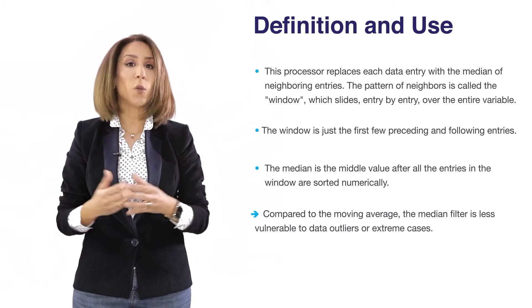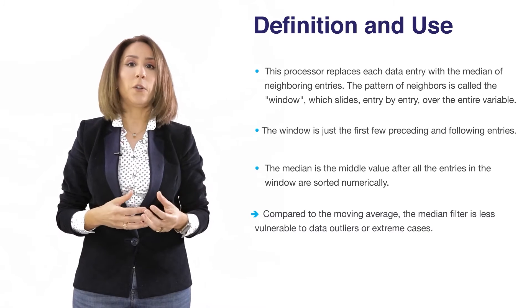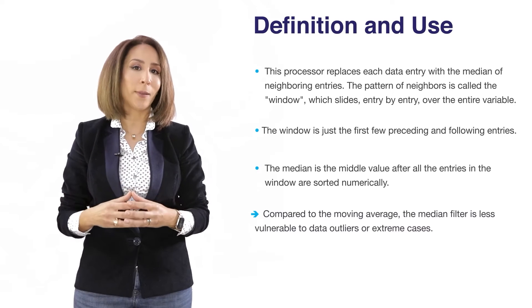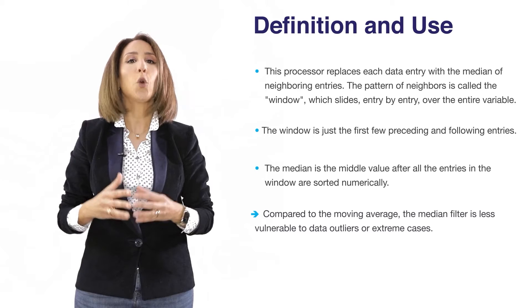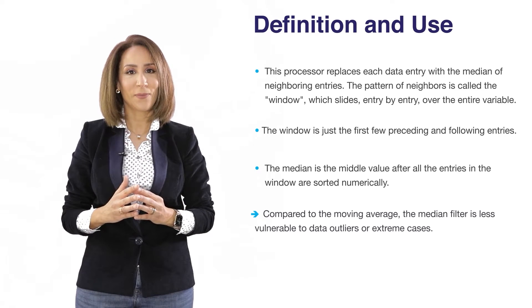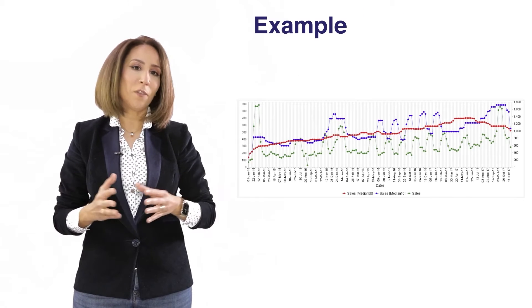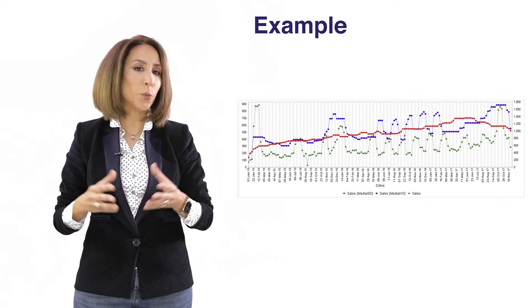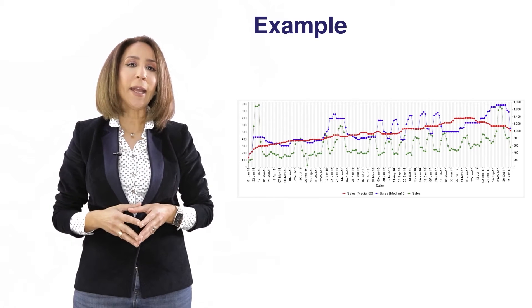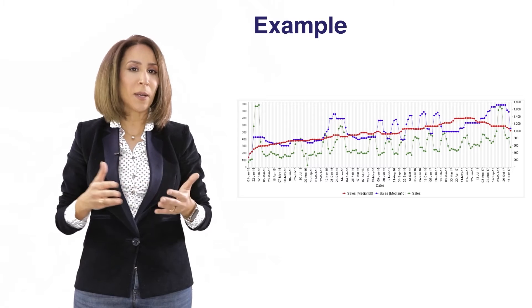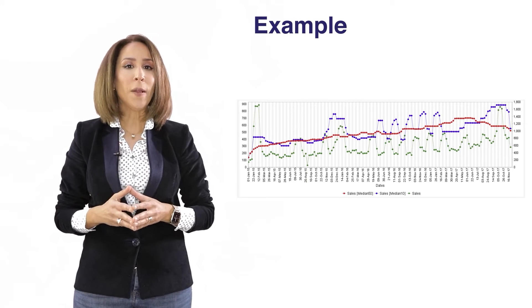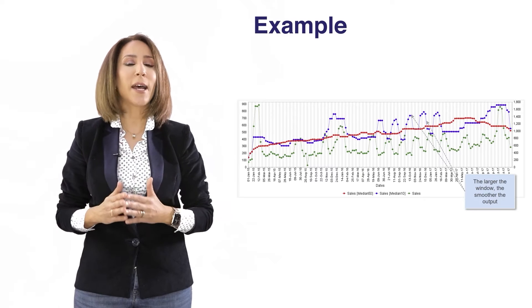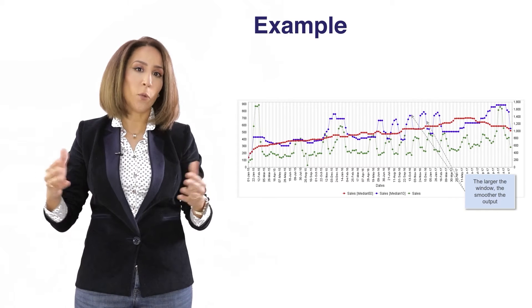If you compare the output from the median filter and the moving average, generally the median filter is less sensitive to outliers than moving average when it comes to smoothing your data. This is an illustration of the median filter where we've used it to smooth the sales data. As the window you define gets larger, the output will be smoother.